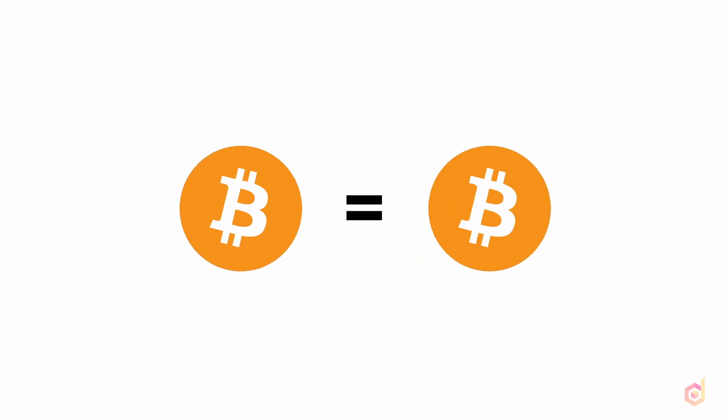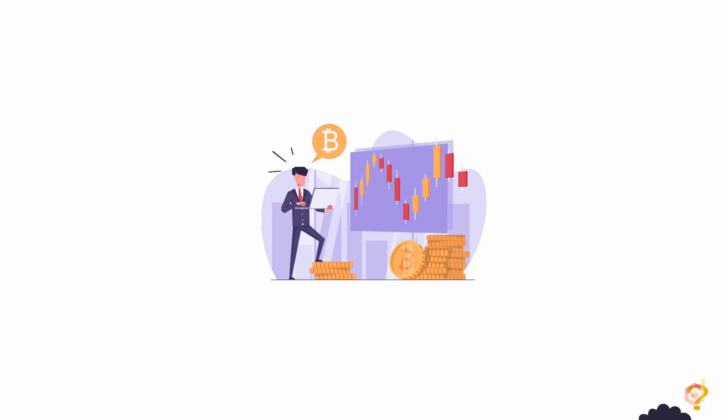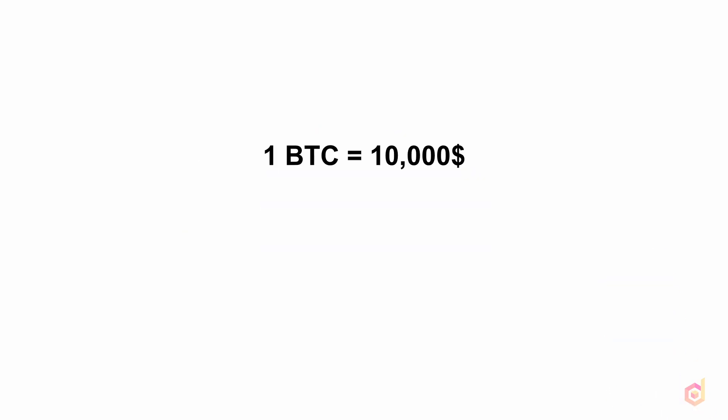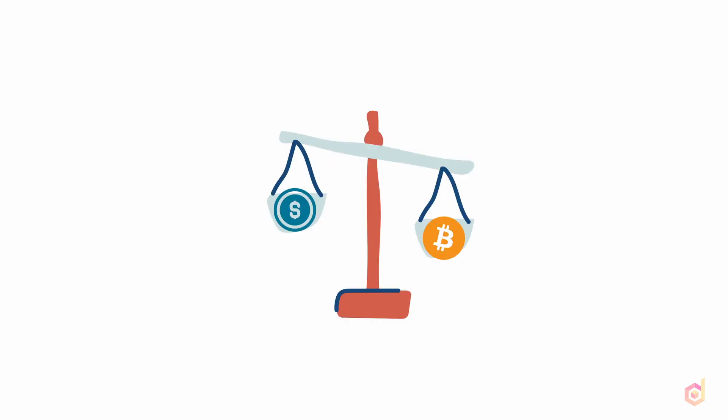You can consider Bitcoin as a fungible token, as one Bitcoin will always have the same value as another one Bitcoin. You might confuse token fungibility with crypto trading, since one Bitcoin won't always have the same value in dollars. But that's a completely different story — here you are comparing two different fungible tokens, that's why you get the price difference. While trading one fungible token with another, the price will be dependent on market supply and demand.